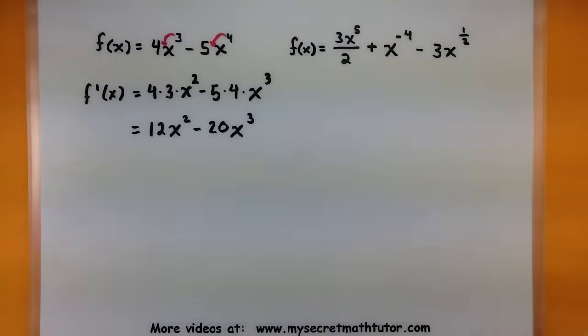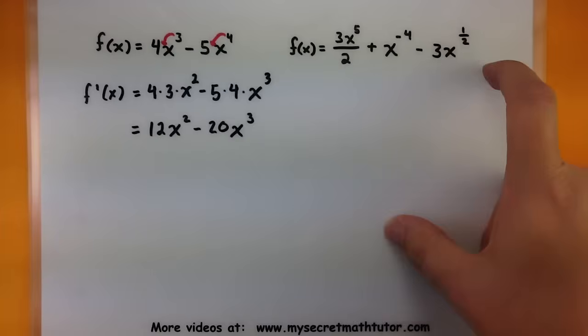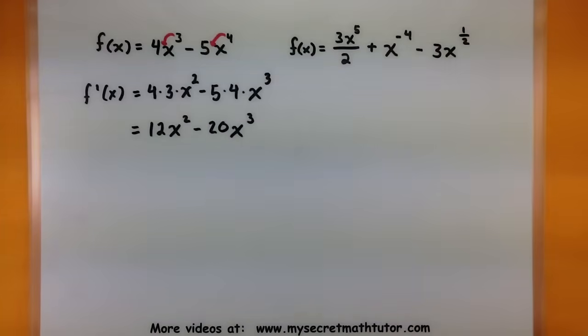One thing that often gets lost with the power rule is as long as that power is a number that is not zero, you can use it. What I'm talking about is we're going to use this for negative powers and fractional powers, and the rule is just going to work out the same as before. Watch very closely in this last example.